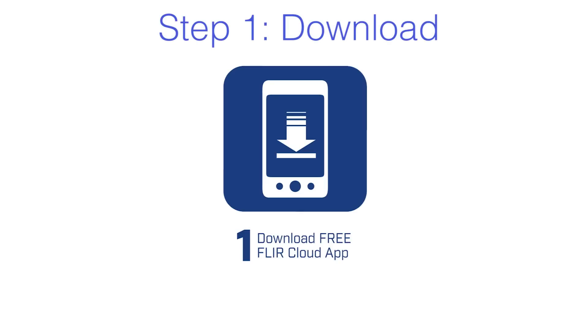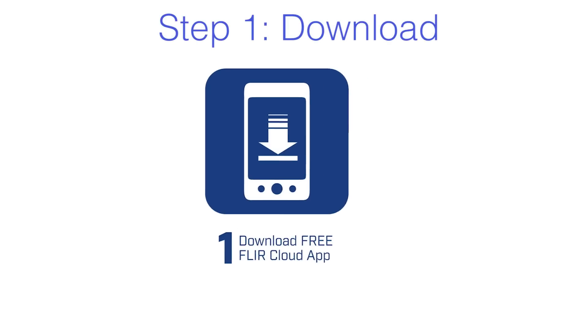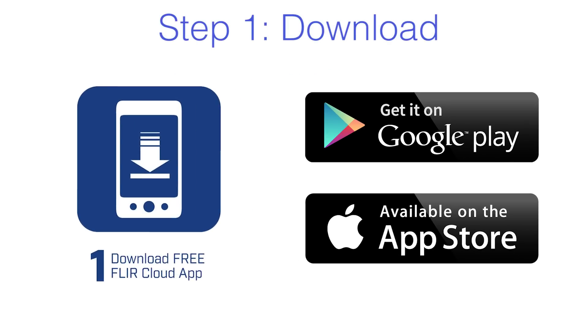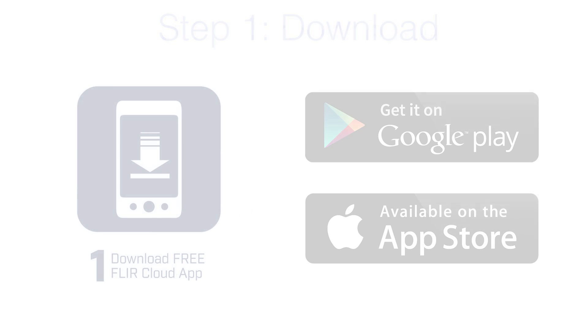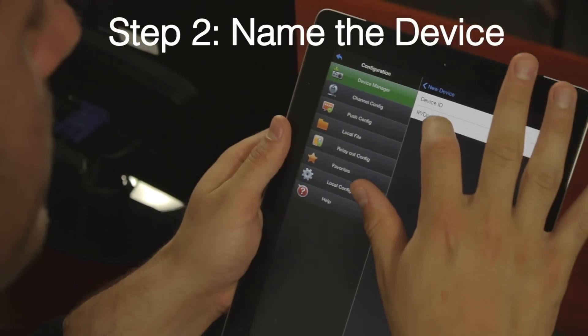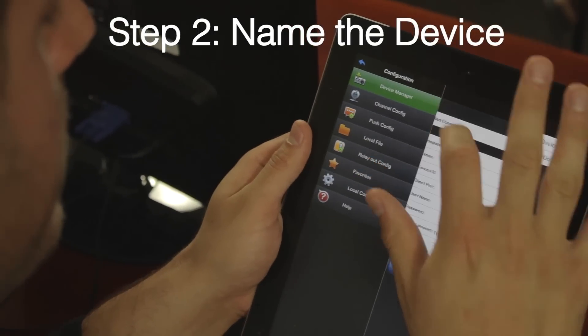First, you'll download the free FLIR Cloud app on your iPhone, Android, or iPad from the App Store. Enter the name of the device — let's call it X for now.